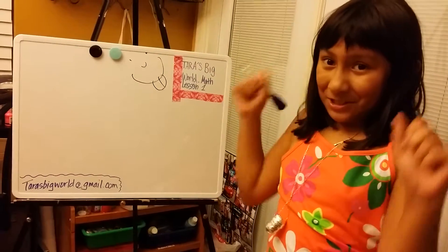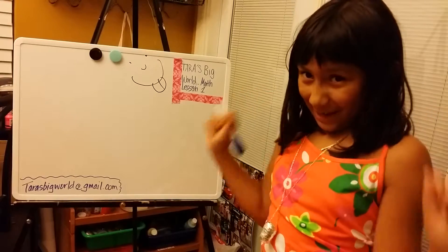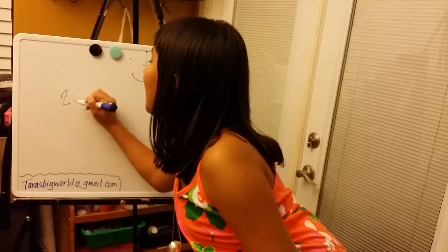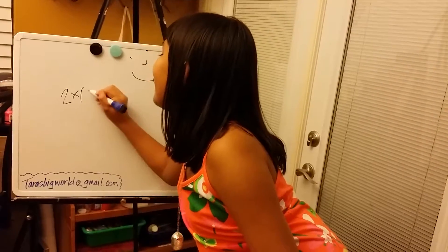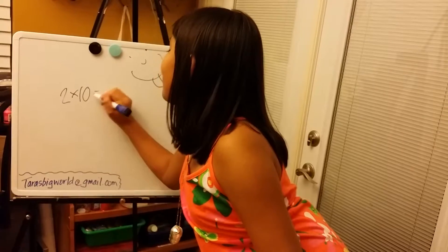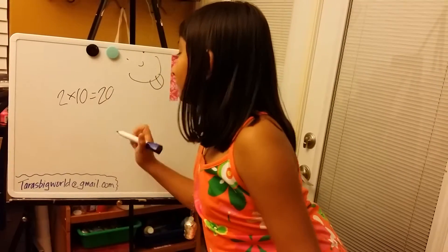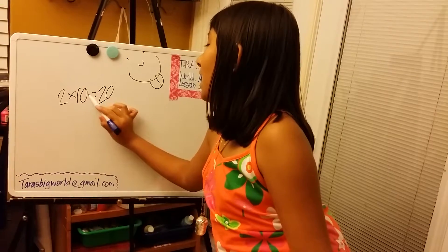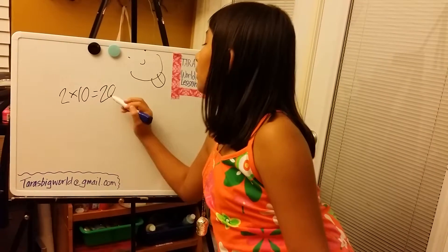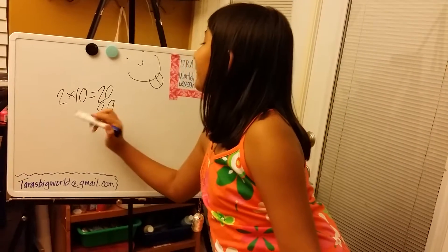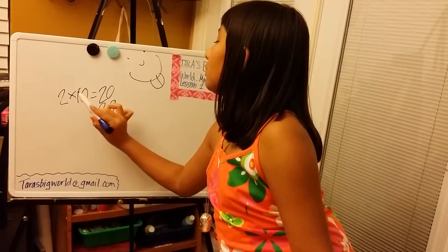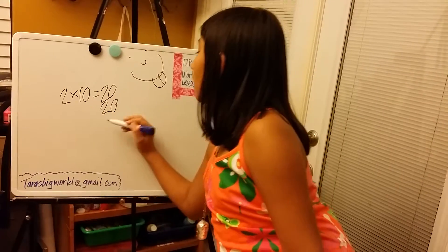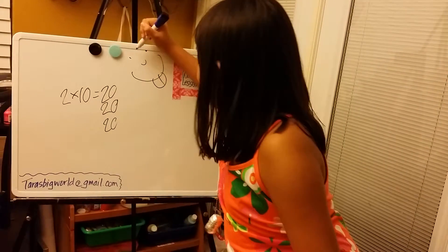Now let's move on to our last number of the day. Two times ten equals twenty. Two times ten equals twenty. Yay!